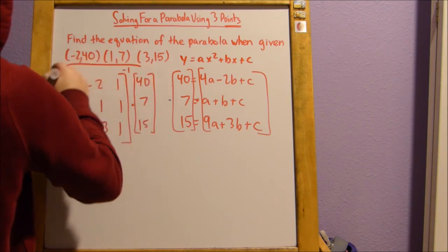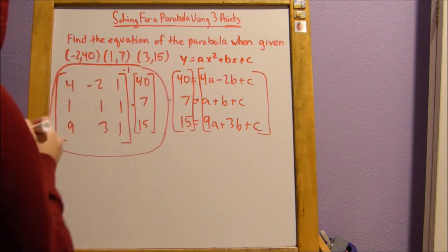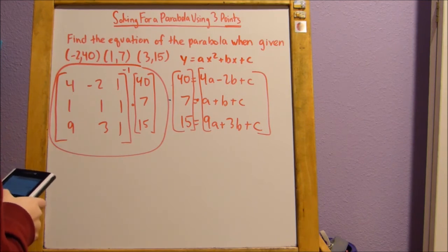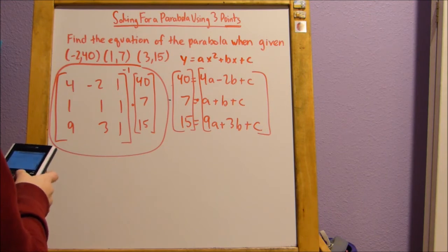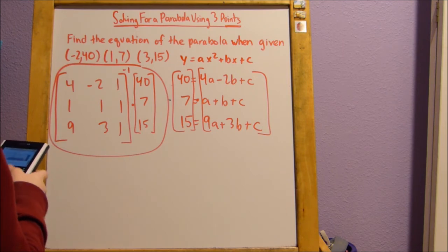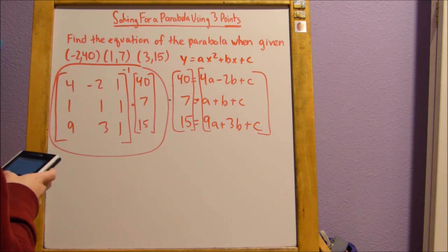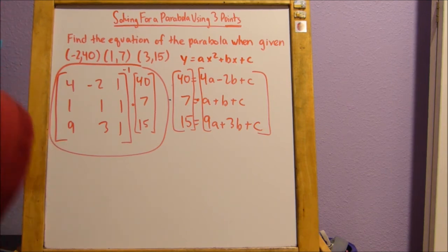So now, plug this into your calculator. I'll do it right now. So, 4, negative 2, 1, 1, 1, 1, 9, 3, 1 to the negative 1 times column rows 3, columns 1, 40, 7, 15.